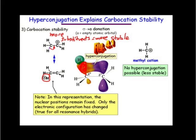Now looking over at this methyl cation, there's no hyperconjugation possible. We don't have a neighboring sigma orbital that can donate into that empty p orbital in a pi-type fashion.